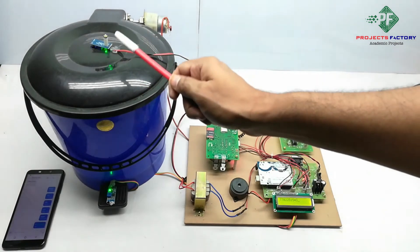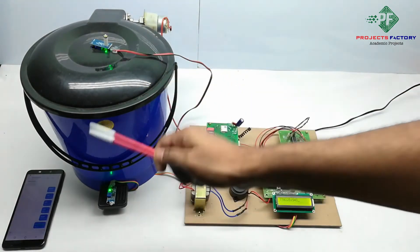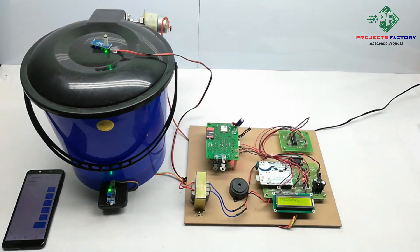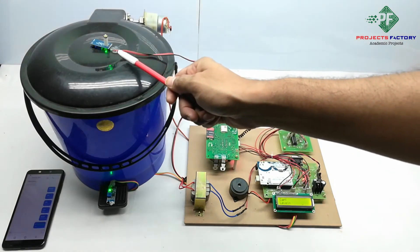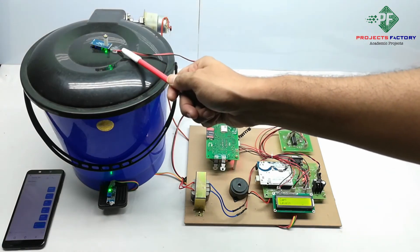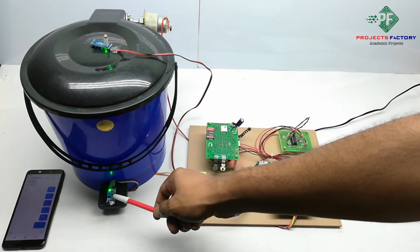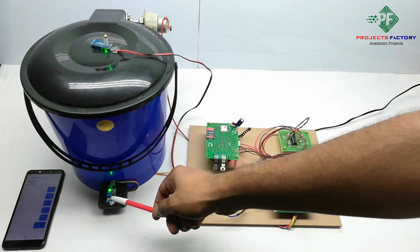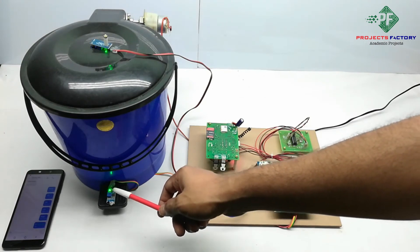Two IR sensors arranged on dustbin like this. Here first sensor can identify the filling of dust or material. This sensor can identify any person entry for dustbin cap open.